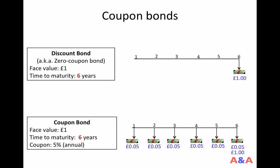In a previous class, we studied how to get a yield curve from the prices of zero-coupon bonds. Today, we study how to get the yield curve from prices of coupon bonds. But before that, let me explain how a coupon bond is different from a discount bond.